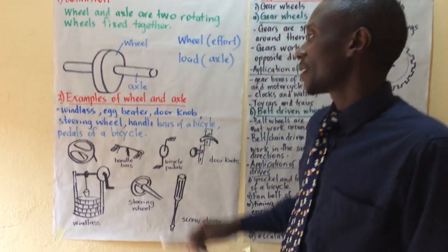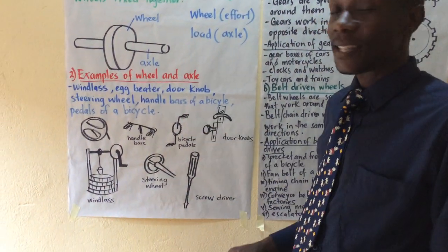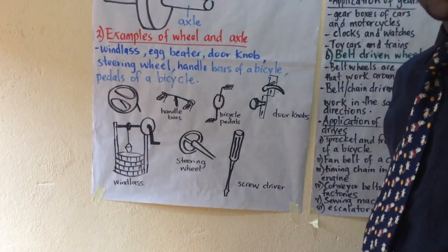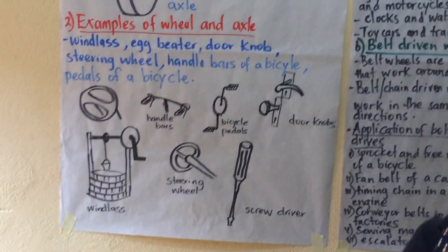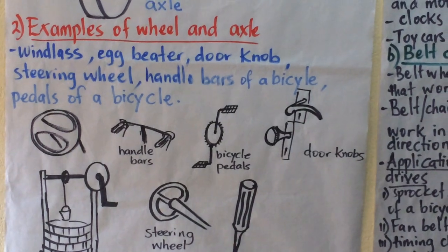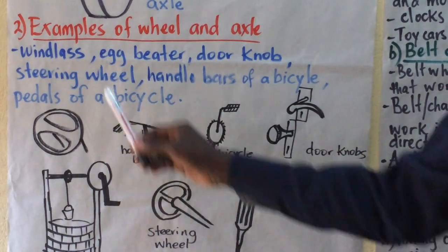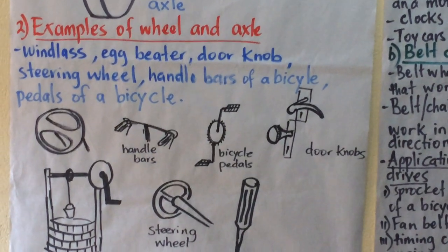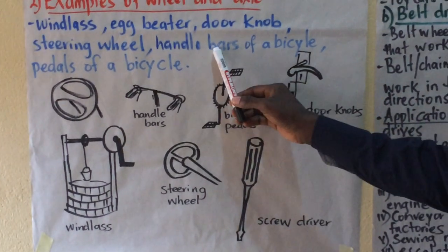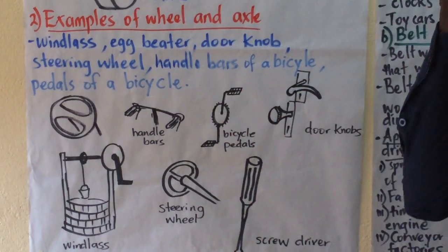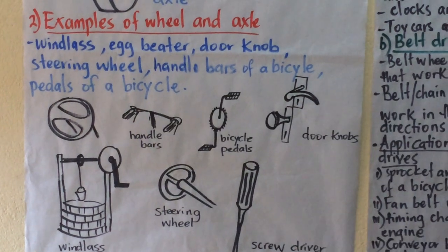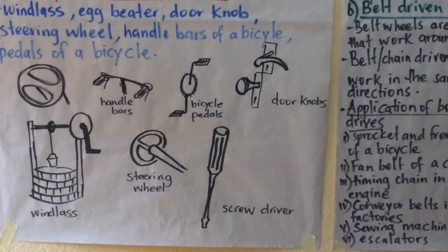Examples of devices that use the wheel and axle mechanism: we have got a windlass, an egg beater, a doorknob, the steering wheel of a car. Even some motorboats have got a steering wheel. We also have the handlebars of bicycles and motorcycles, the pedals of a bicycle, and the screwdriver.